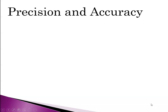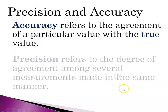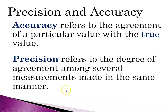That leads to a discussion of precision versus accuracy. Accuracy refers to agreement of a particular value to its true value. So if you measure the boiling point of water to be 90 degrees Celsius, it's not very accurate because the true value is 100 degrees Celsius. Precision refers to the degree of agreement among several measurements — the reproducibility. You can have three measurements that are close together, like measuring boiling water three times and getting 90 degrees Celsius each time, but they're not accurate because the true value is 100 degrees Celsius.